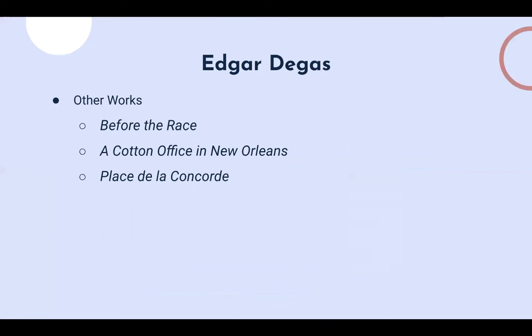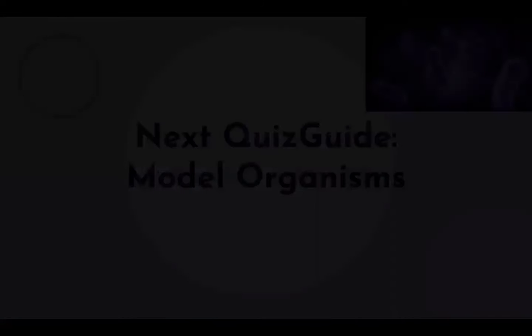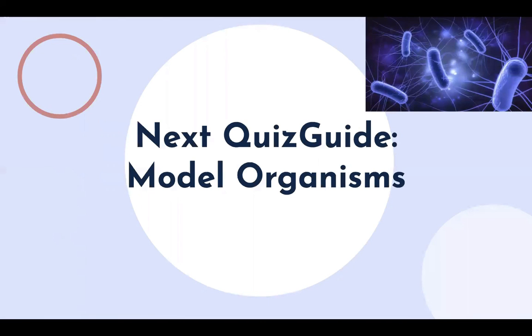Some other works you can look at by Edgar Degas include Before the Race, The Cotton Office in New Orleans, and Place de la Concorde. These are more advanced paintings and you may not see these until nationals — they'd be early clues for Degas and probably won't be tossed up at the high school level. That's it for Impressionism Part 1. I covered Monet, Manet — not to be confused, they are two different people — and Degas. Be sure to check out the next video on model organisms. Thanks for watching.